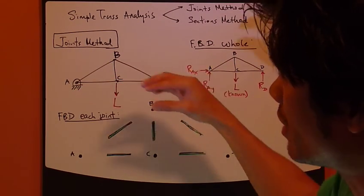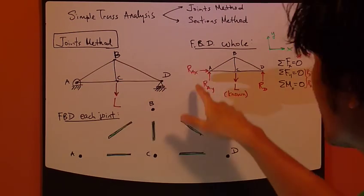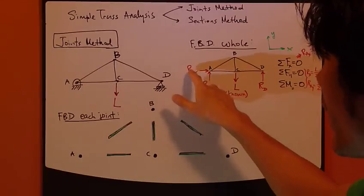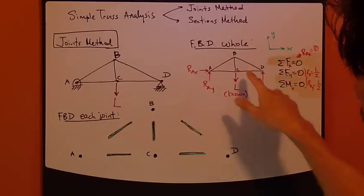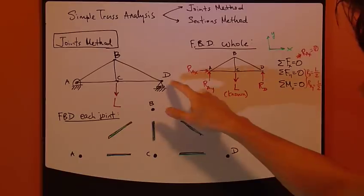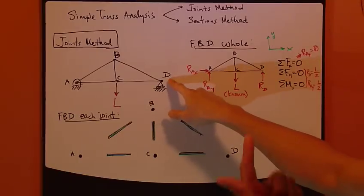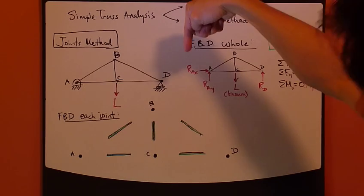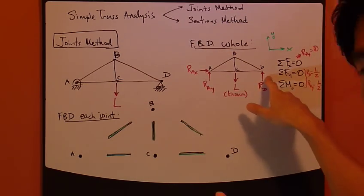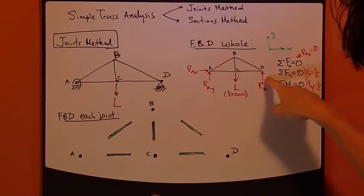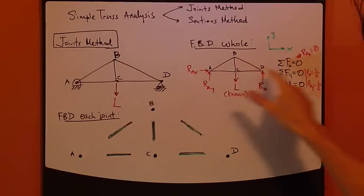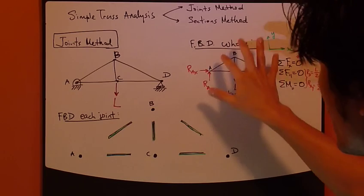Since we have a two-dimensional pin joint at A, it's constrained in both x and y directions, so there are reaction forces Rax and Ray. The load L is applied at C. The roller at D only constrains movement in the y direction — it cannot move downward — so the reaction force Rd points back up.